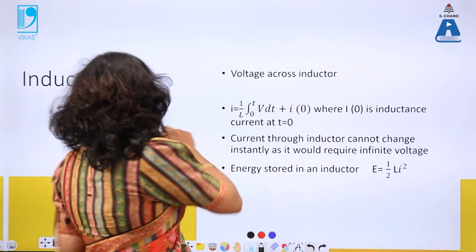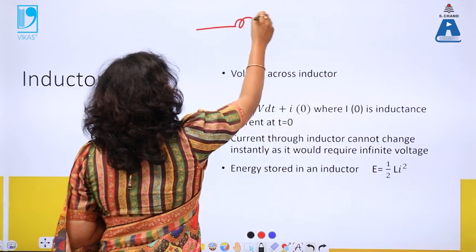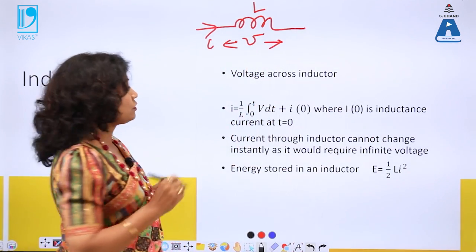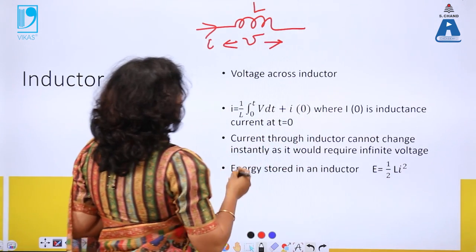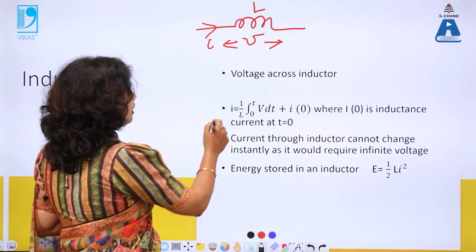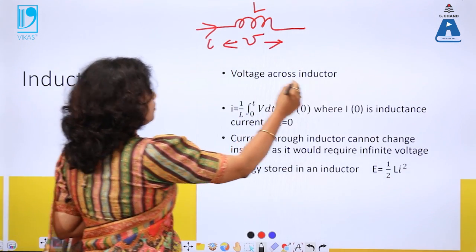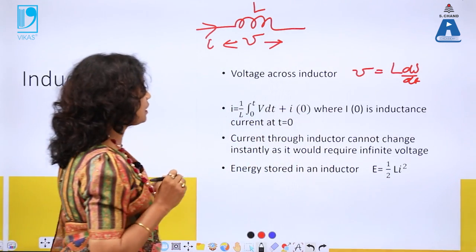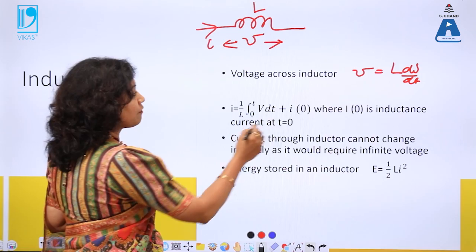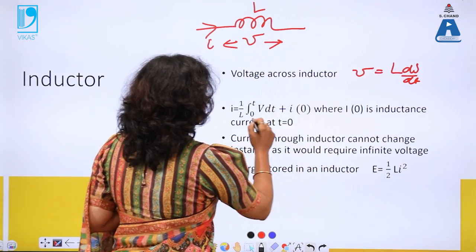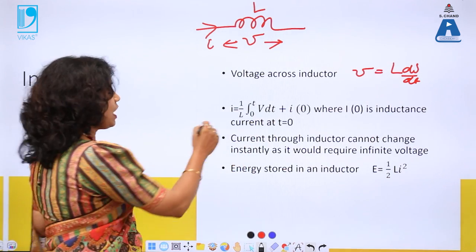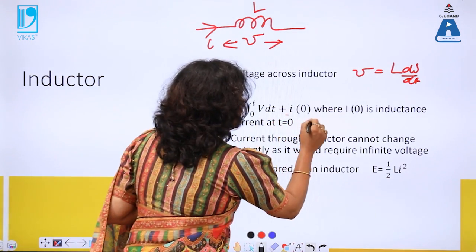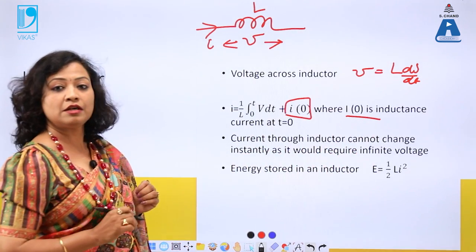The next element is the inductor. Suppose the current through the inductor is I and the voltage across it is V. The voltage across the inductor is given by V = L·di/dt. From this equation, I can find current: I = (1/L) × ∫V dt, with limits from 0 to T, plus I₀, where I₀ is the initial current at t = 0.